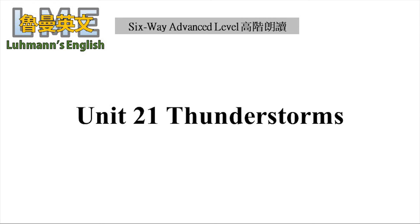How can you determine how close to you a flash of lightning has struck? The amount of time it takes for a thunderclap to follow is thought to be a good indication. When you see lightning, begin counting slowly. If you can count to five before you hear thunder, the lightning probably struck about five miles away. If you can't even count to three, take cover immediately.